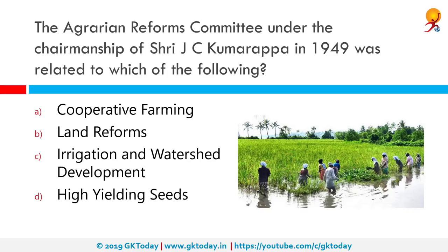The Agrarian Reforms Committee under the chairmanship of Sri J.C. Kumarappa in 1949 was related to which of the following? They were related to cooperative farming. Cooperative farming refers to an organization in which each member farmer remains the individual owner of his land, but farming is done jointly. Profit is distributed among member farmers in the ratio of the land owned by them.